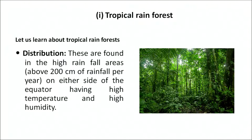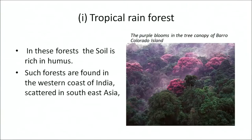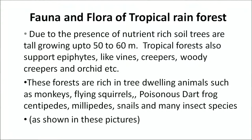Tropical rainforests are found in high rainfall areas — above 200 centimeters of rainfall — on either side of the equator, having high temperature and high humidity. In these forests, the soil is rich in humus. Such forests are found in the Western Ghats of India and scattered in Southeast Asia. Due to nutrient-rich soil, trees are tall, growing up to 50 to 60 meters. The tropical forests also support epiphytes like vines, creepers, woody creepers and orchids. These forests are rich in tree-dwelling animals such as monkeys, flying squirrels, dart frogs, centipedes, millipedes, snails and many insect species.